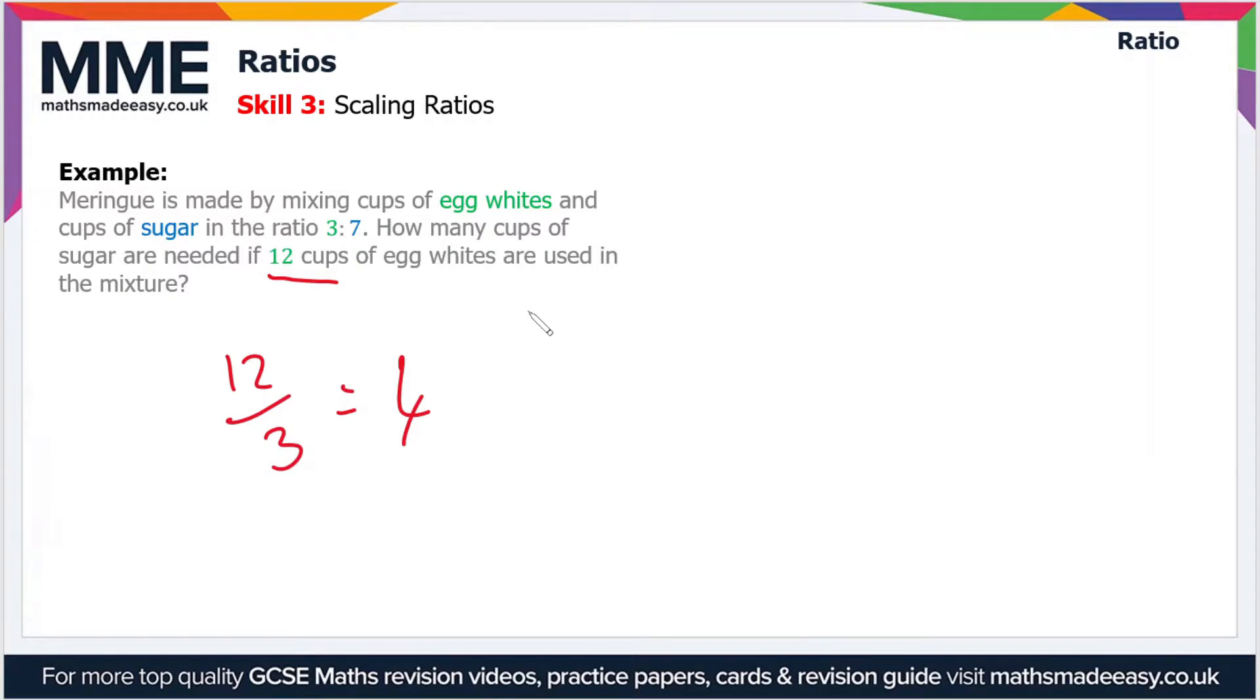And that will give us how many cups of sugar we need. So that is 4 times 7, which is 28. So we need 28 cups of sugar.